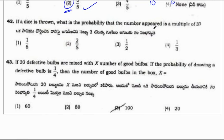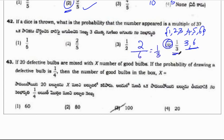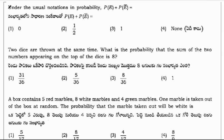If a die is thrown, what is the probability that the number appeared is a multiple of 3? So one time die is thrown, total possible outcomes on a die are 1, 2, 3, 4, 5, 6. Multiples of 3 will be 3 and 6. So 2 favorable outcomes out of 6 which will be 1 by 3. Next question, under the usual notation in probability, P of E plus P of not E will be always equal to 1.